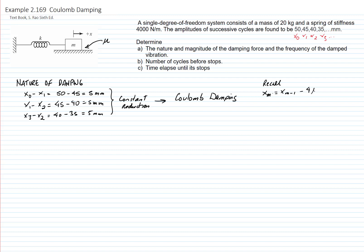We have an equation that relates those amplitudes. The amplitude in one cycle will be the amplitude in the previous cycle minus 4 mu n over k, mu being the coefficient of friction times the normal, divided by the constant of the spring.